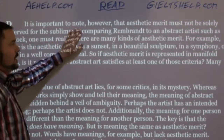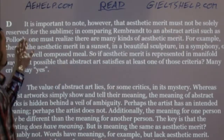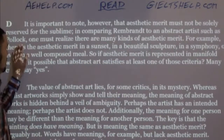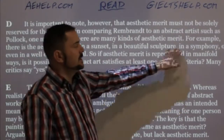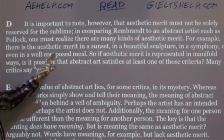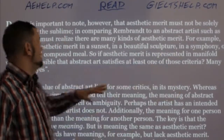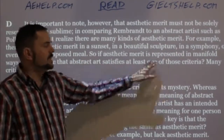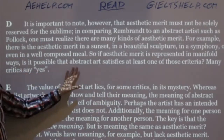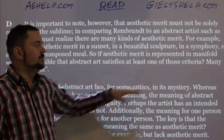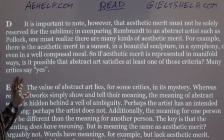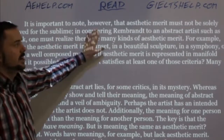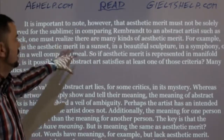It is important to note, however, that aesthetic merit must not be solely reserved for the sublime. In comparing Rembrandt to an abstract artist such as Pollock, one must realize there are many kinds of aesthetic merit — for example, the aesthetic merit in a sunset, in a beautiful sculpture, in a symphony, or even in a well-composed meal. So if aesthetic merit is represented in many ways, is it possible that abstract art satisfies at least one of those criteria? Many critics say yes — this is the pro side arguing for the value of abstract art, saying there are many types of beauty.